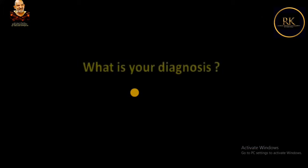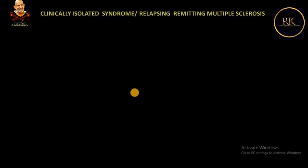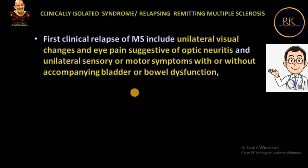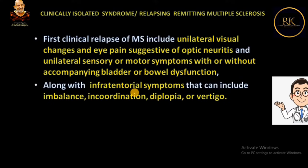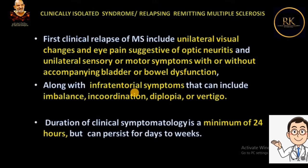Her serum ESR and C-reactive protein, as well as anti-nuclear antibody and vitamin B12, were normal. So what is your diagnosis? We will come to this case later, but first let us discuss clinically isolated syndrome or relapsing-remitting multiple sclerosis. It is defined by the first clinical relapse of MS, including unilateral visual change and eye pain suggestive of optic neuritis, and unilateral sensory or motor symptoms with or without accompanying bladder or bowel dysfunction, along with infratentorial symptoms that can include imbalance, incoordination, diplopia, or vertigo. Duration of clinical symptomatology is a minimum of 24 hours, which can persist up to days to weeks.